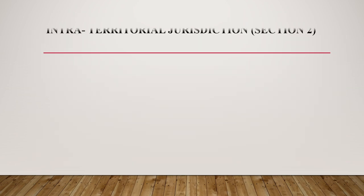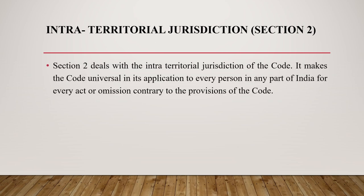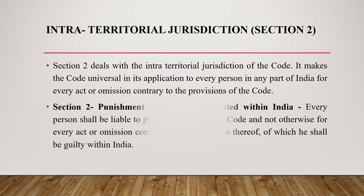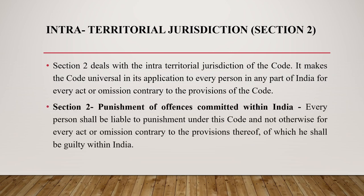Section 2 of IPC makes the code universal in its application to every person in any part of India for every act or omission contrary to the provisions of the act. That means any person will be held liable and punished if he is committing any crime within the territory of India.